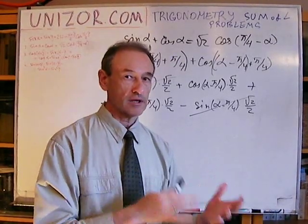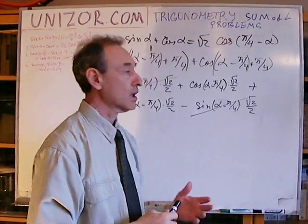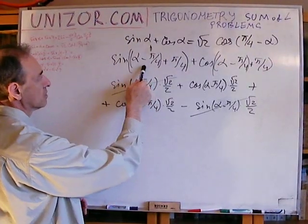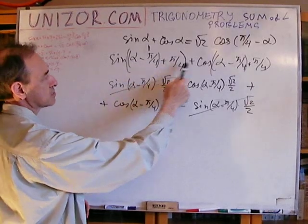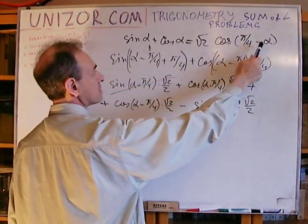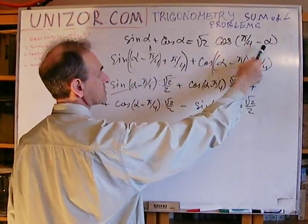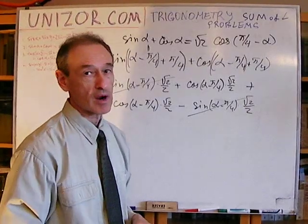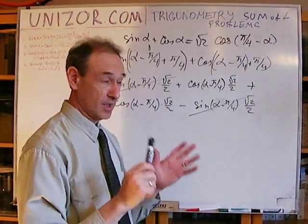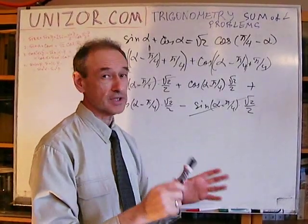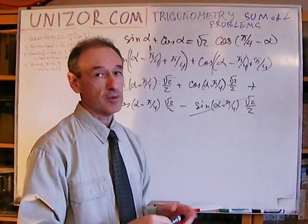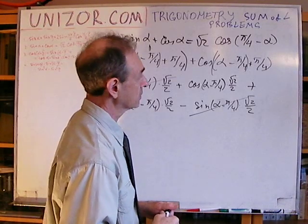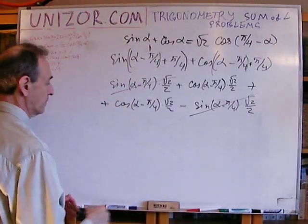Again, what's the idea behind this? Representation of alpha as the sum of these two. Just looking at the right side and prompted by the value of the square root of two — because it's definitely something related to sine of pi over four, 45 degrees, or cosine for the same token.